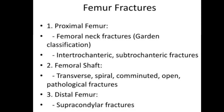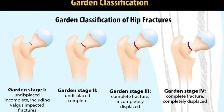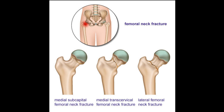Proximal femoral fractures include femoral neck fractures classified by the Garden classification. Garden stage one is an undisplaced incomplete fracture. Garden stage two is an undisplaced complete fracture. Garden stage three is a complete fracture incompletely displaced. Garden stage four is a complete fracture completely displaced. Femoral neck fractures also include medial subcapital, medial transcervical, and lateral femoral neck fractures.